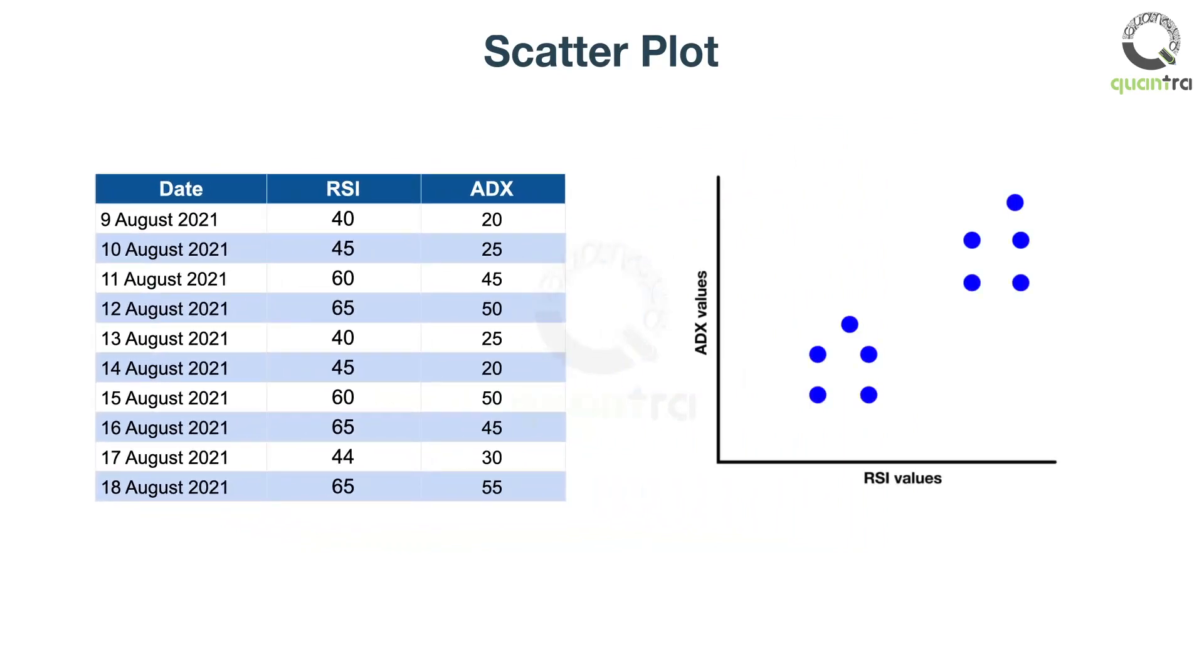What is the first and easy thought which comes to your mind to reduce this two-dimensional plot to a one-dimensional plot? The easiest way is to remove one of the dimensions. For example, either remove ADX or remove RSI values.